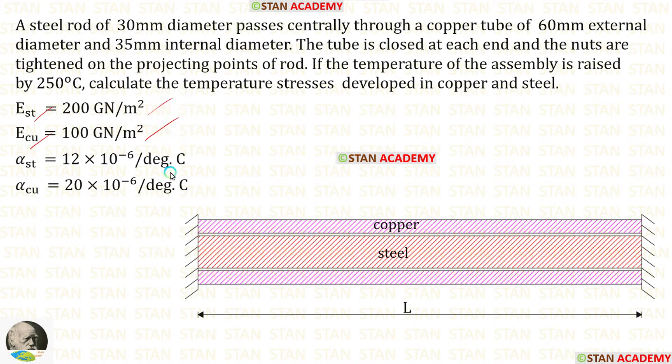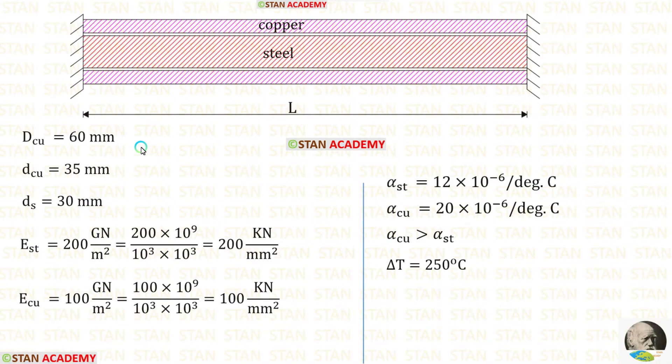The values of coefficient of linear thermal expansion are given. First let us make the given data. External diameter of copper is 60 mm, internal diameter of copper is 35 mm, diameter of steel is 30 mm.